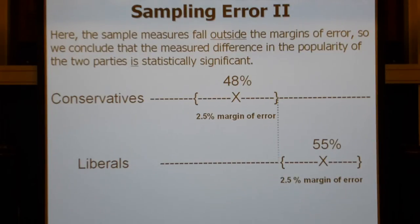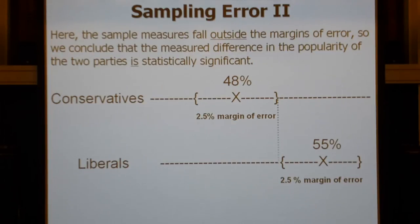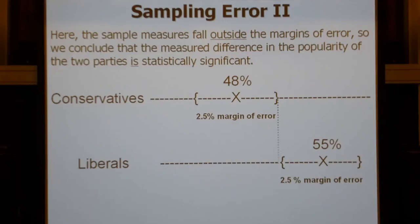Here's the next case: we do another survey and come up with 48% Conservative and 55% Liberal. Those margins of error do not overlap — there is daylight between them. If the margins of error do not overlap, the difference between the Conservative and Liberal results is statistically significant, and the Liberals are ahead in the population. If an election were held today, the probability is the Liberals would take it. That's all a survey can say — results are accurate within a certain margin of error, and we would get similar results about 95% of the time.